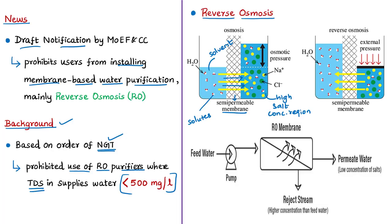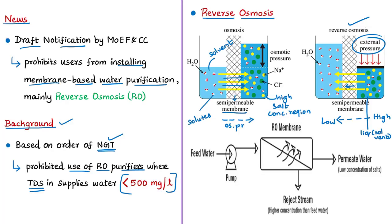In reverse osmosis, an external pressure is applied to overcome osmotic pressure, which is what drives water molecules from low to high salt concentration under normal conditions. Because of this external pressure, water moves through the semi-permeable membrane from higher salt concentration to lower salt concentration. The RO membranes allow the solvent — water — to pass through, while rejecting solutes such as salts and low molecular weight organic materials.